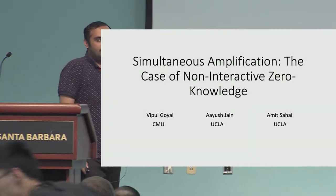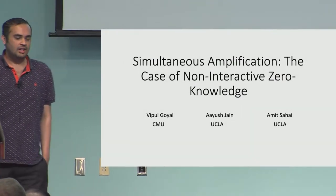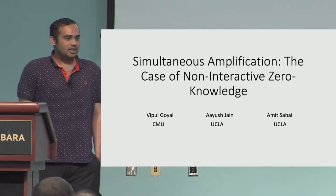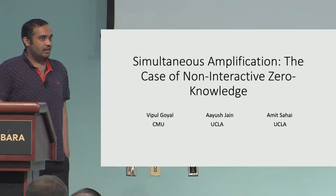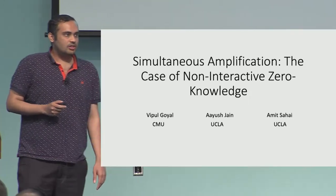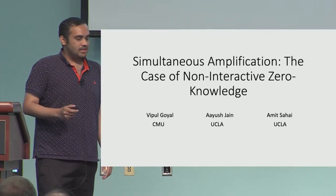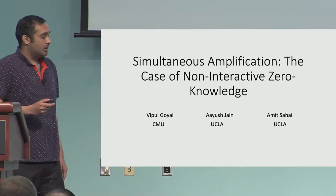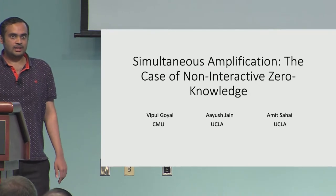I'm going to talk about simultaneous amplification, the case of non-interactive zero knowledge. This is joint work with Vipul and Amit. In this work, we consider a very basic question: suppose I give you a non-interactive zero knowledge scheme which is not fully secure — meaning it doesn't have full soundness and full zero knowledge property. Can we construct a NIZK argument system which satisfies full security?